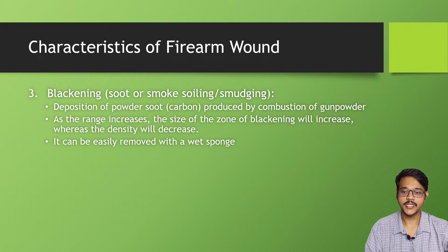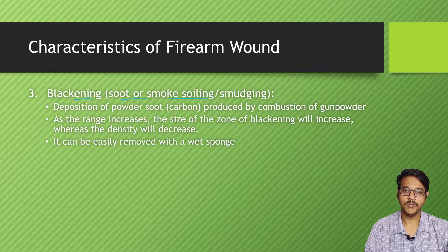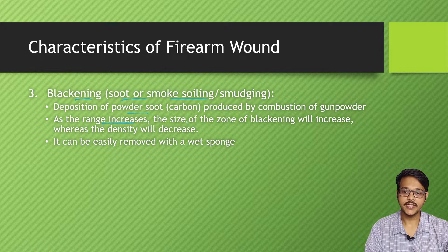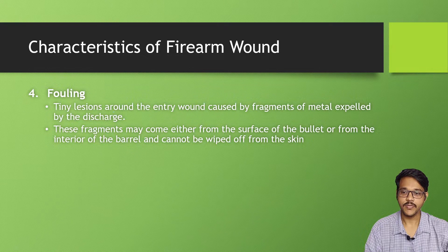Next is blackening, soot, smoke soiling, or smudging. This is caused by burnt particles — burnt gunpowder releases black smoke, which gets deposited on the skin. As the range increases, the size of the zone of blackening also increases, while density decreases. It can be easily removed with a wet sponge, as it is simply soot on the surface.